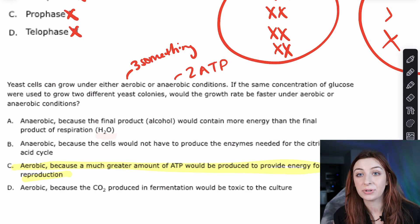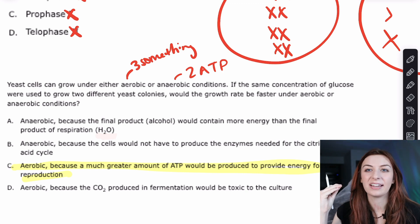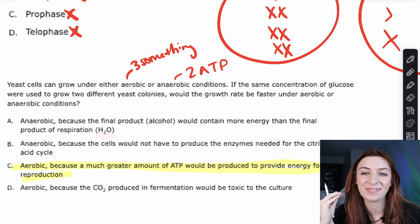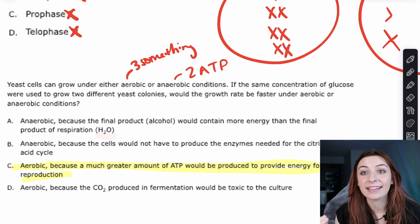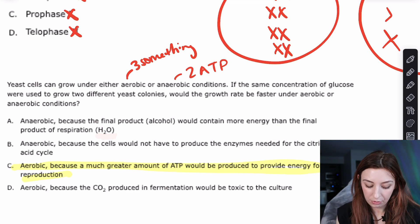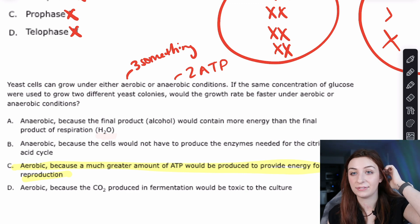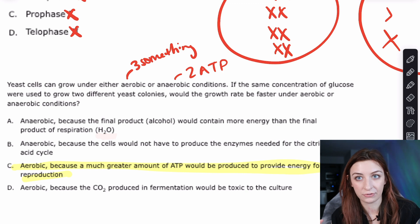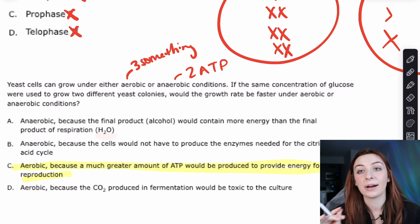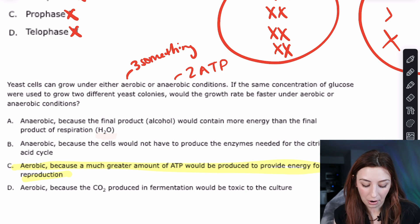Would the growth rate be faster under aerobic or anaerobic conditions? I see students I feel like this is a pretty simple question. But I think students see that it's simple and they're like this is the MCAT. It's not going to be this simple. And they overthink it. It's going to be aerobic. Aerobic because a much greater amount of ATP would be produced to provide energy for reproduction. That's it. Full stop. You don't have to overthink this question.